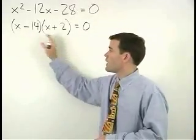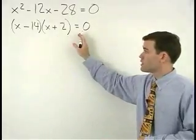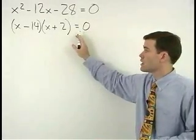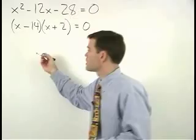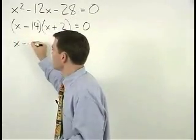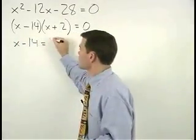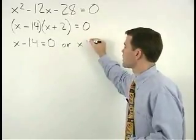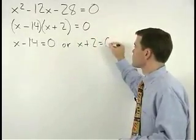We have two binomials that are multiplying together to equal 0. So either x minus 14 equals 0 or x plus 2 equals 0.